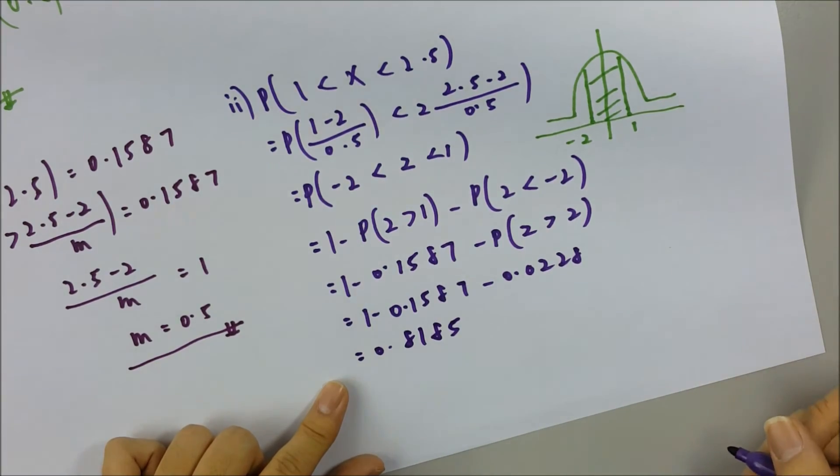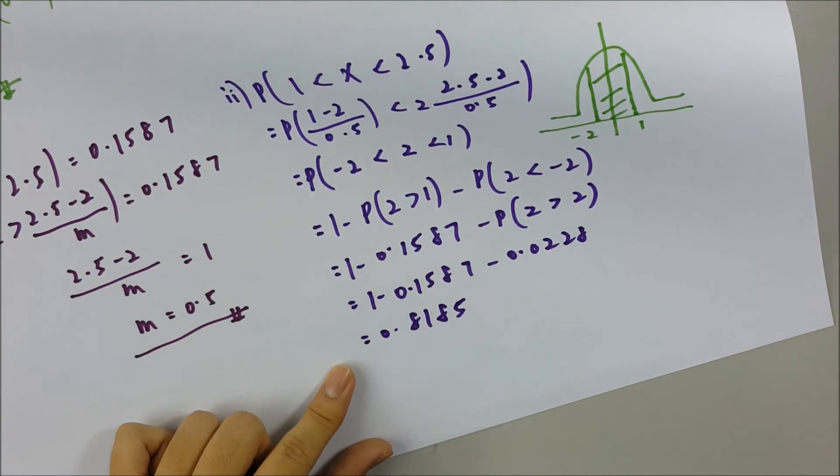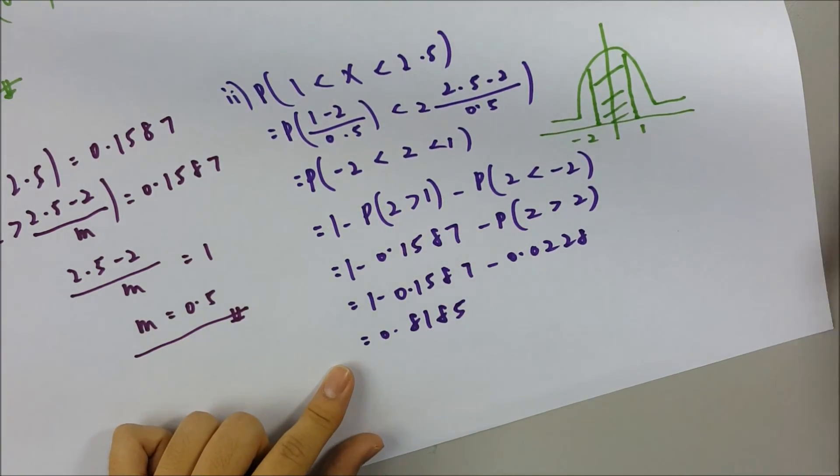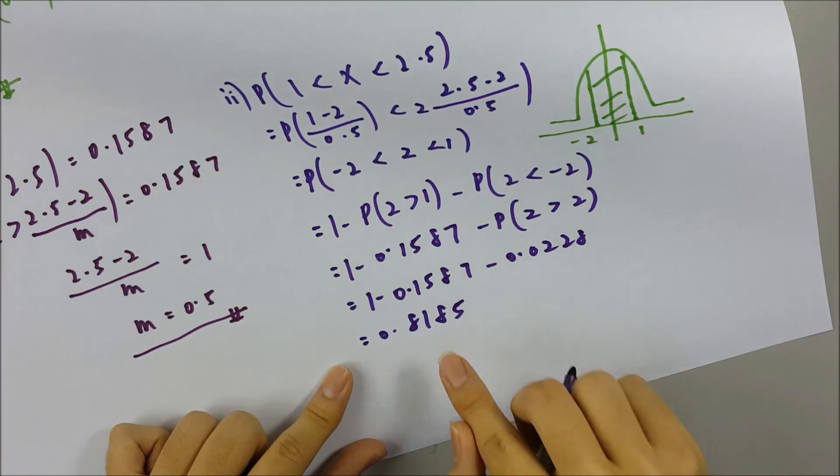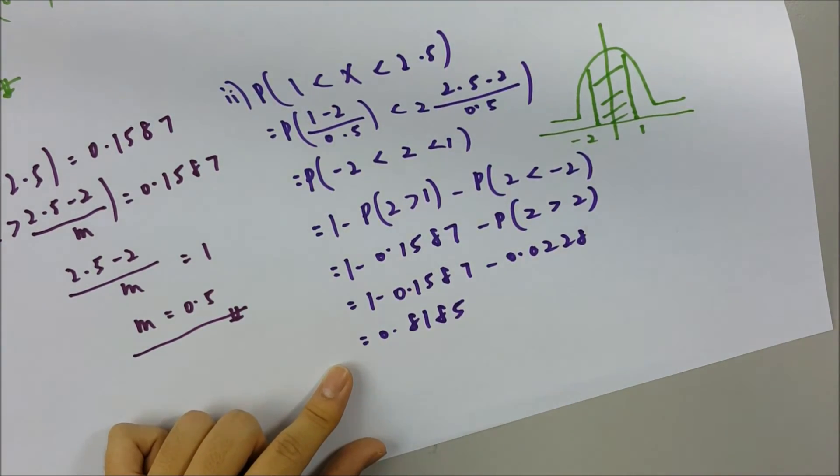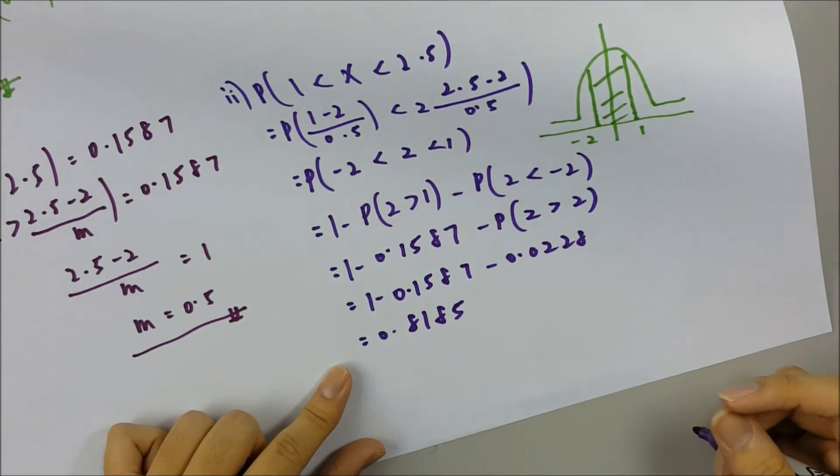So this is not the answer yet. Now it's given that the total number of pineapples is 1320. So we want to use the total number and multiply the probability to find the number of pineapples that have the mass between 1 kg and 2.5 kg.